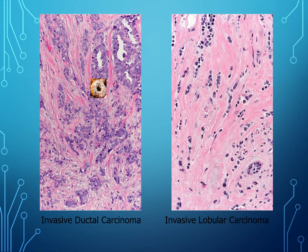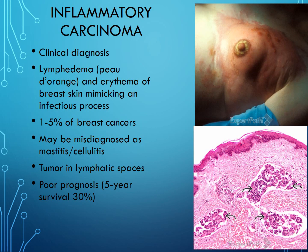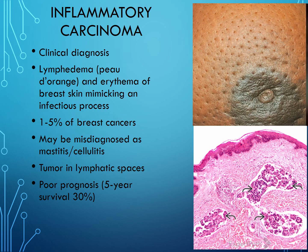Inflammatory carcinoma is really a clinical diagnosis. Tumor cells involve and clog the lymphatics of the breast, causing an inflammatory reaction. This is associated with a very poor prognosis because the vast majority of patients who present with this finding have metastatic disease at the time of presentation. Classically you see peau d'orange — changes to the skin that make it look like an orange peel — also associated with lymphatic involvement by cancer.